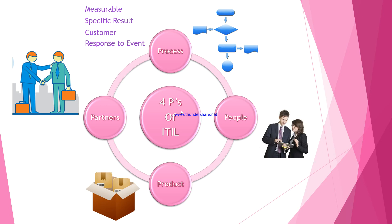The fourth characteristic is Response to an Event. Whenever you are executing a process, there are chances that everything will not go as per the planned flow. When a specific event happens, a trigger is generated, and there should be a response for that particular event — some response or trigger for specific events occurring during the process or when it deviates from the designed flow.